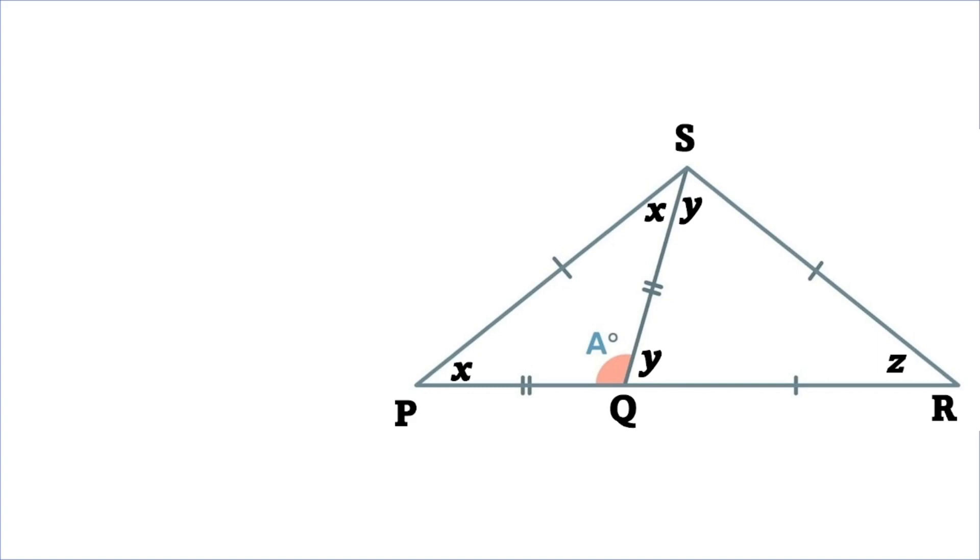Now, because the triangle PQR is isosceles and those two angles X are the base angles, then I know that angle X will be equal to 180 minus A divided by 2.